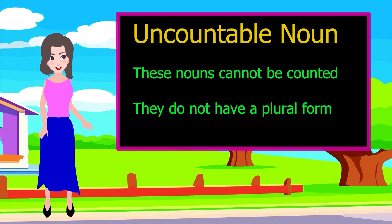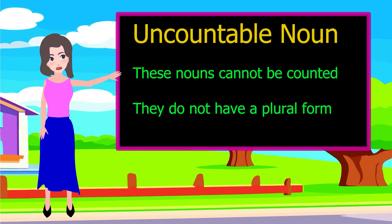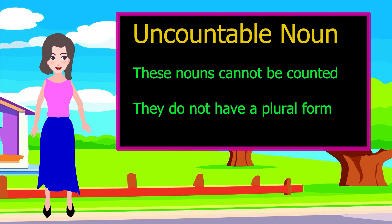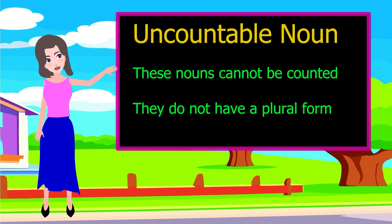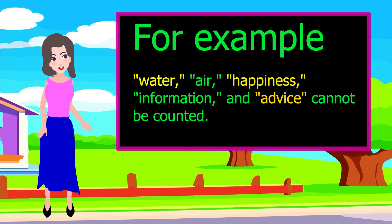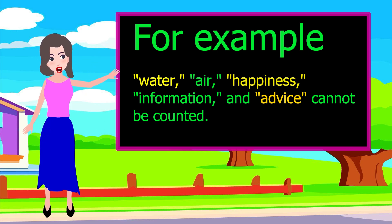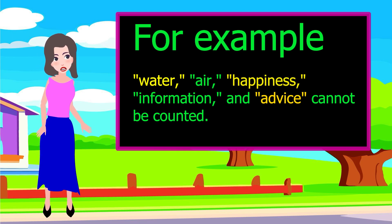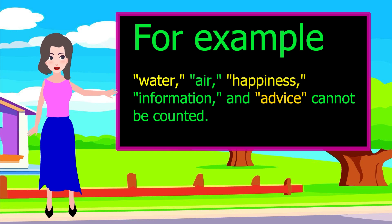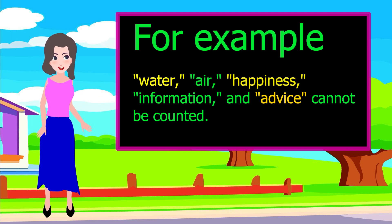Uncountable nouns cannot be counted. They do not have a plural form. For example, water, air, happiness, information, and advice cannot be counted.